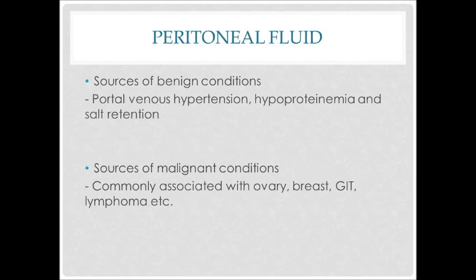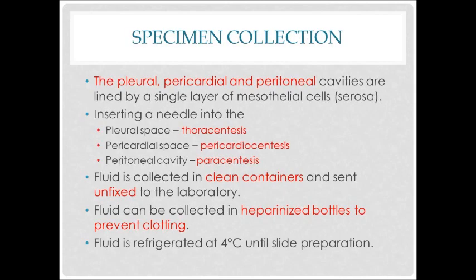For peritoneal fluid, sources of benign conditions include portal venous hypertension, hypoproteinemia, and salt retention. Meanwhile, sources of malignant conditions are commonly associated with ovary, breast, lymphoma cancers, and others. You now have the idea of the fluid sources for each condition.